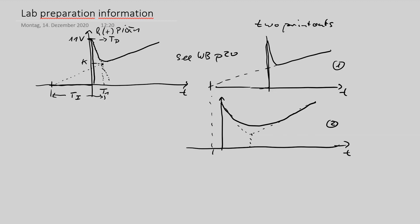Furthermore, you should read this signal into my identification program — the VindFC# identification module. We have a connection between the scope and the PC where you can read in the complete measured curve and then identify the PIDT1 circuit. We identify this PIDT1 circuit two times.